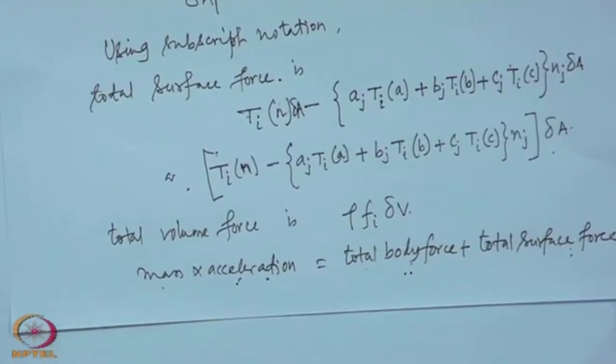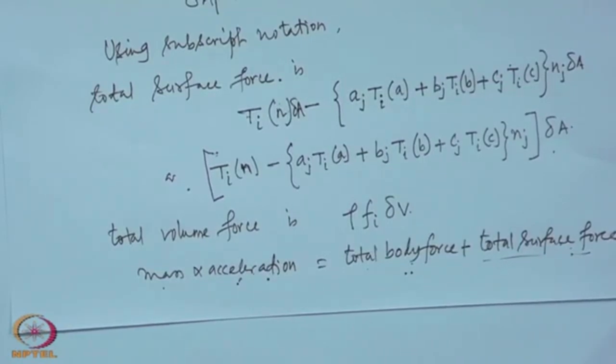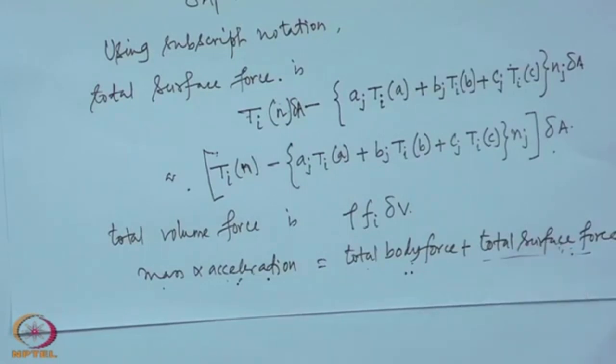However, if the fluid is at rest or in equilibrium, this condition is always valid. So even when the characteristic size or volume approaches zero, the equation holds. Two terms are decreasing as delta l cubed while another decreases as delta l squared — the only way they can balance is if the total surface force is entirely zero. That is the only possibility; otherwise they cannot balance.